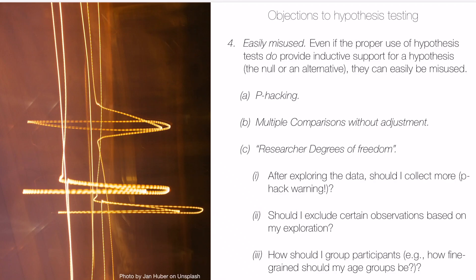In a previous lesson, we looked at a collection of objections to frequentist inference and hypothesis testing related to misuse — for example, p-hacking and researcher degrees of freedom, and multiple comparisons. These were objections not necessarily to frequentist inference itself and its underlying logic, but objections to the way that it is easily misused.